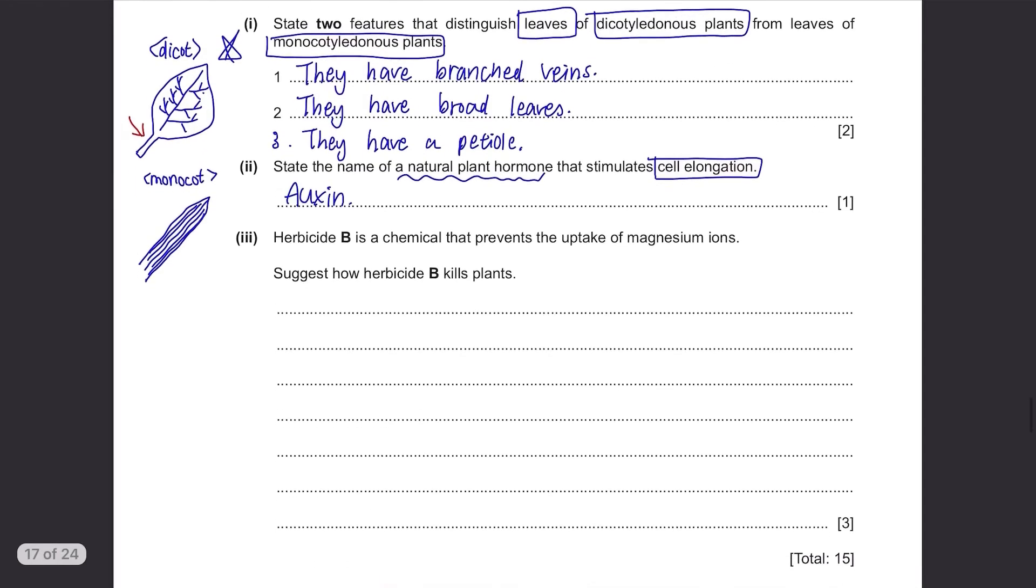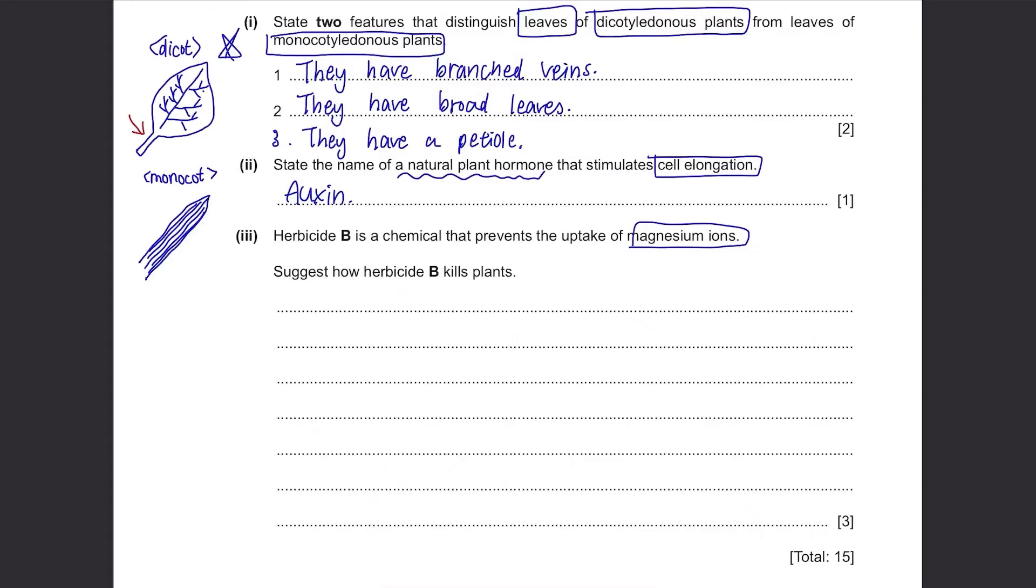Herbicide B is a chemical that prevents the uptake of magnesium ions. Suggest how herbicide B kills plants.